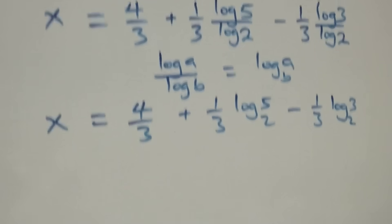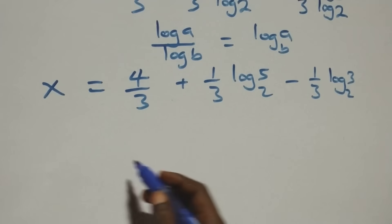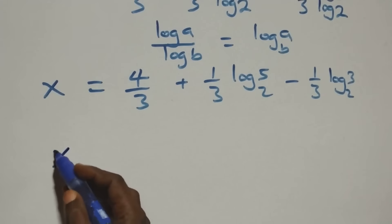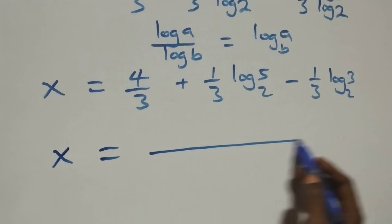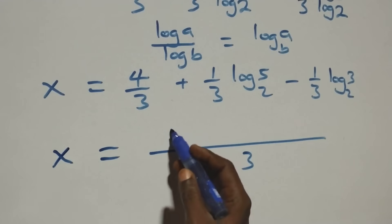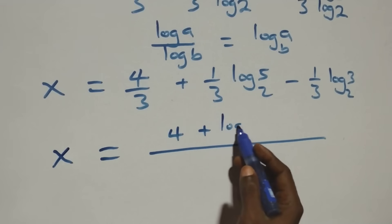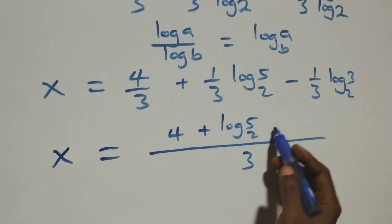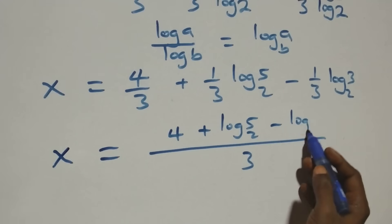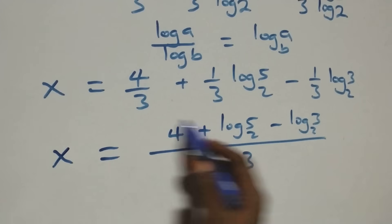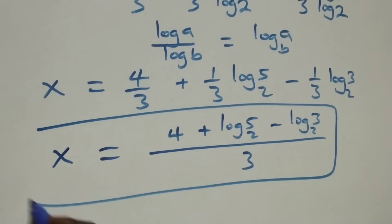We bring this together as one fraction. This becomes x equals (4 + log₂5 − log₂3) over 3. That is the value of x: x equals (4 + log₂5 − log₂3) all over 3.